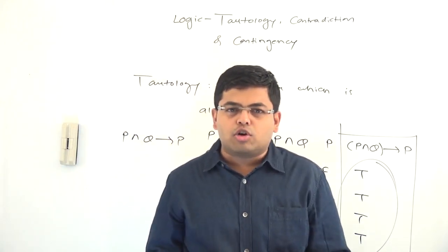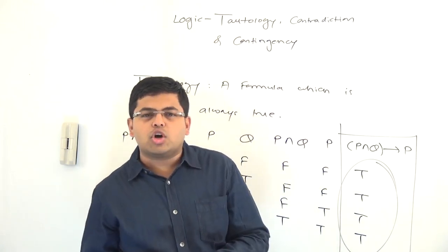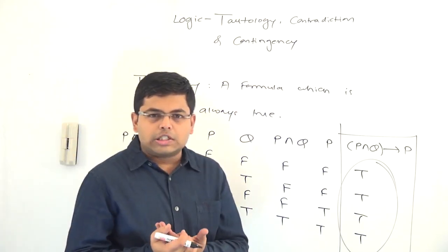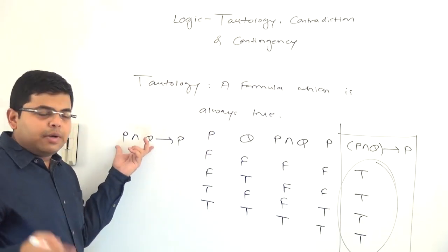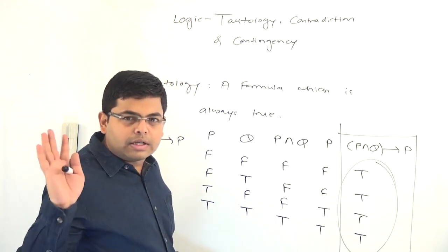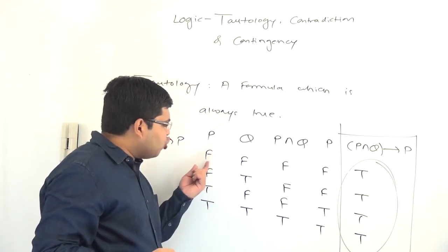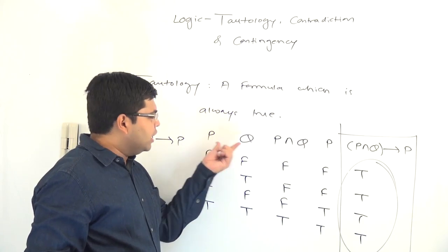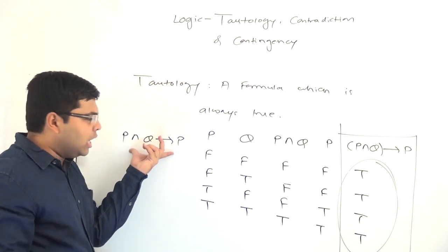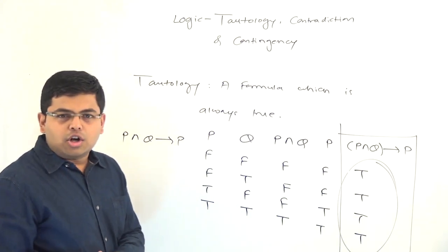So just to restate the definition of tautology: whenever the final column contains all true values, the formula is called a tautology. The formula is always true independently of the individual values of the variables. Whatever values are assigned to the variables — false or true in any combination — it does not matter; the formula is always going to be true. This is called independence of the variables. The truth value of the formula is independent of the individual propositional values of the variables, and therefore such a formula is called a tautology.